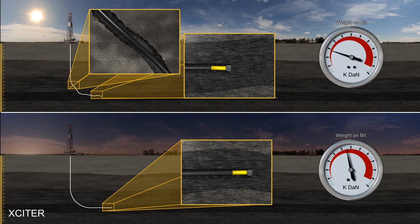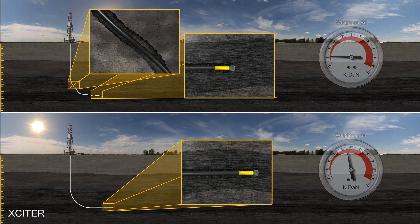For longer or more complex well paths, more than one Exciter can be placed within the drill string.